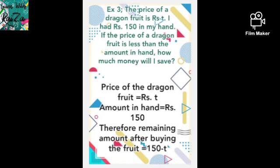Now let's take a slightly more complicated example. The price of a dragon fruit is rupees T, and I had rupees 150 in my hand. The price of the dragon fruit is less than the amount I had, so how much will I save after buying it? First write down the data: price of the dragon fruit equals rupees T, and the amount in my hand is rupees 150. Since the dragon fruit costs less than what I have, the remaining amount after buying it is 150 minus T.